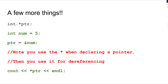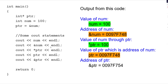A few more things: int* ptr, int num = 5, ptr = &num. Note you use the asterisk when declaring a pointer, and for dereferencing. But when you're assigning a value after you have declared it, you don't put the asterisk in front of ptr unless you want to print or do something with the value. The assignment of the pointer to the address simply says ptr = &num. Write some code like this.